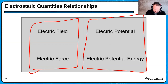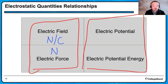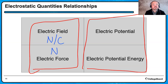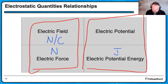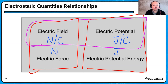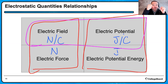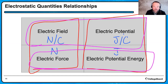Electric force is measured in newtons, and electric field is measured in newtons per amount of charge placed there. Electric potential energy is measured in joules, and electric potential is measured in joules per amount of charge placed there. If I have a charged object, I can point to a point in space and say it has an electric potential — that tells me how much energy it would take to make the configuration of charged objects if I were to place another charge there.